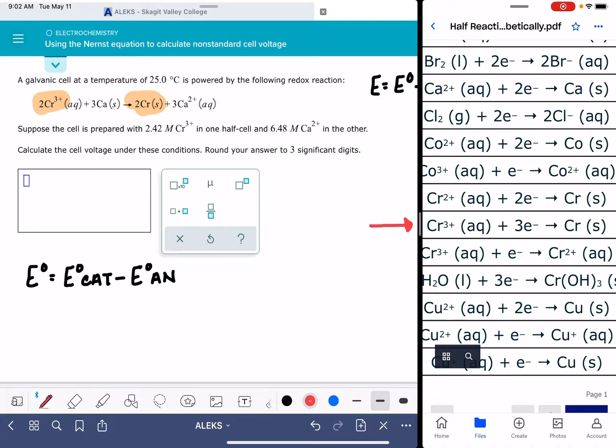So first of all, the reason that we know that this is a reduction reaction, one of the easiest ways is that this equation is written in the same order as our overall equation. In this equation, we have chromium 3 plus on the left, and here we also have chromium 3 plus on the left. And remember that all of the equations in this table, they are all written as reductions.